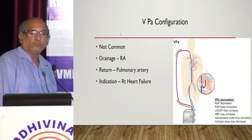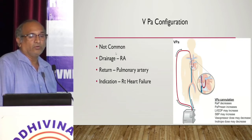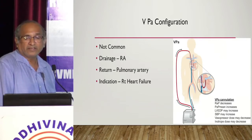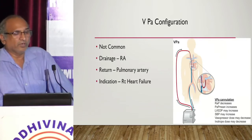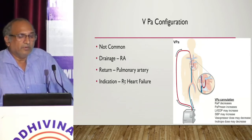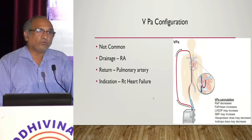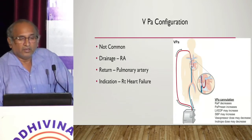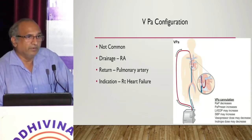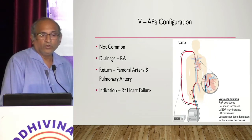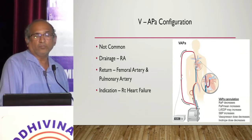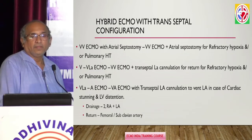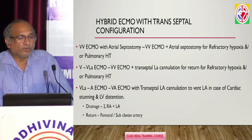Another configuration is VPA — you drain from the right atrium and put the return cannula into the pulmonary artery, possible with a special Protek cannula. This is not common but helps in right heart failure — when the right heart fails, you push the cannula into the pulmonary artery, bypassing the right heart. Or you can convert a VA ECMO into VA-PA ECMO for right heart failure — a hybrid ECMO with a transcardiac configuration.